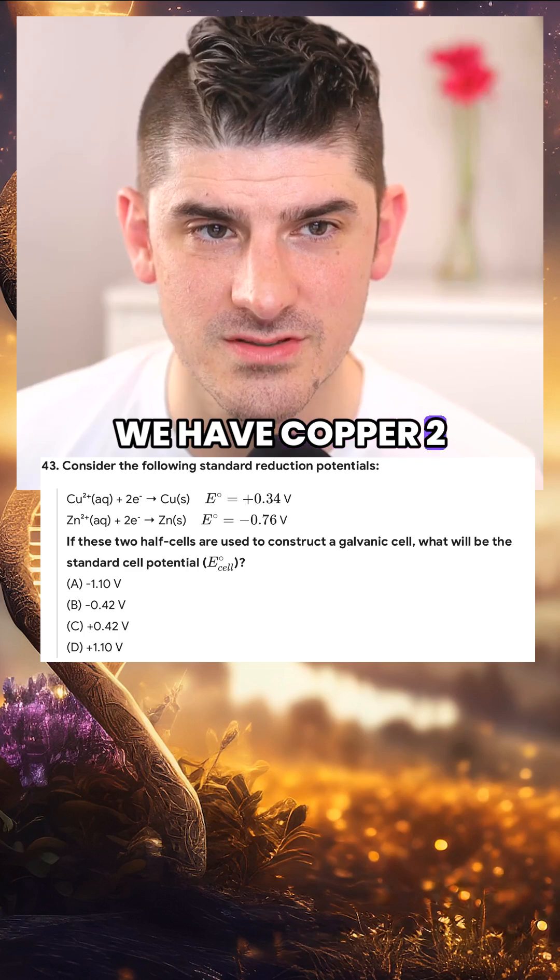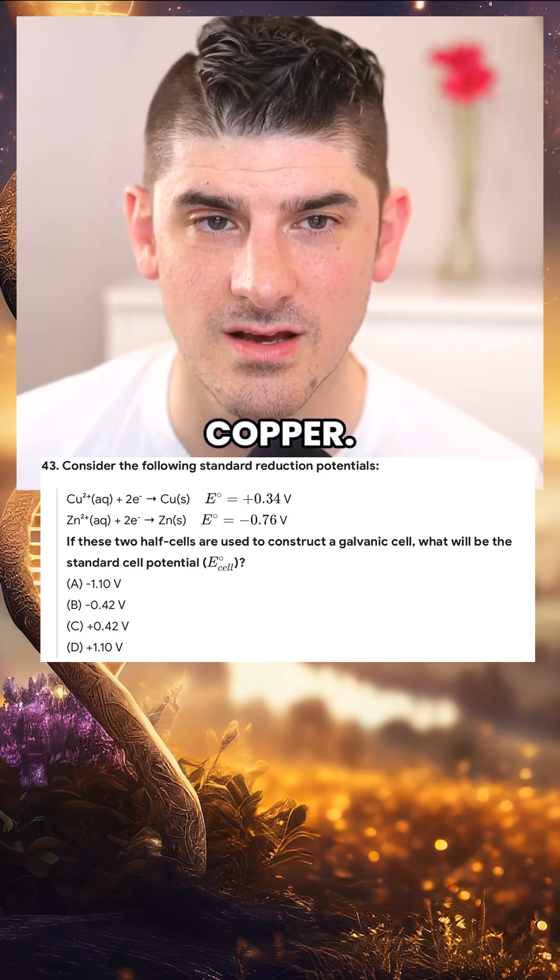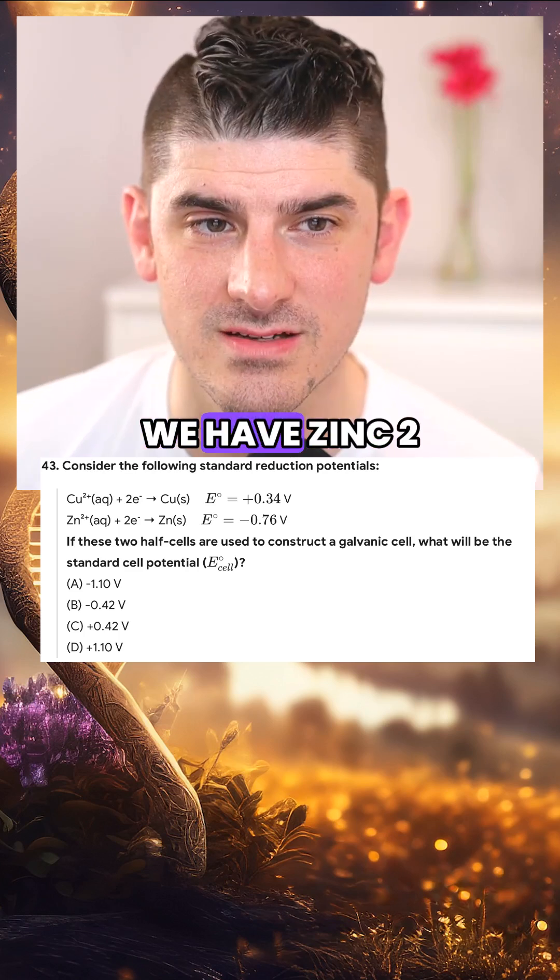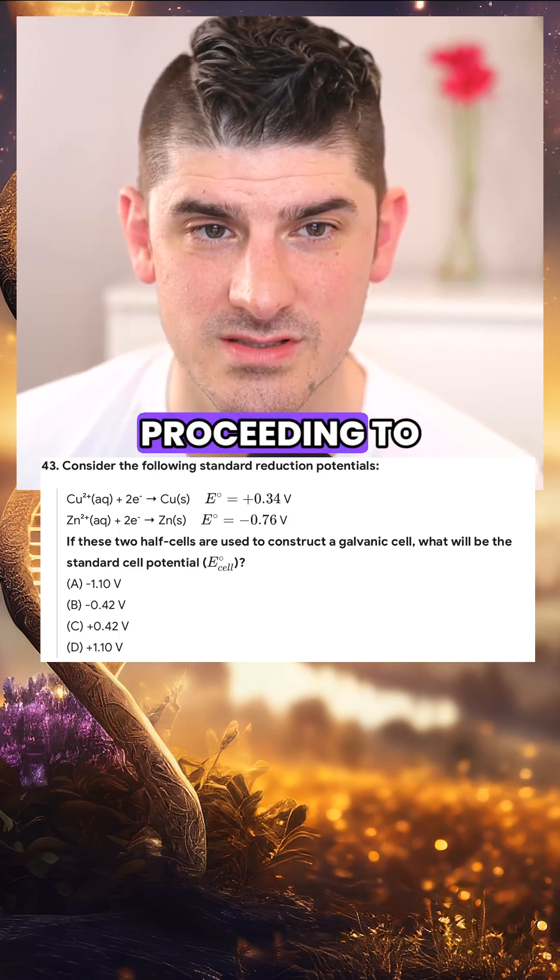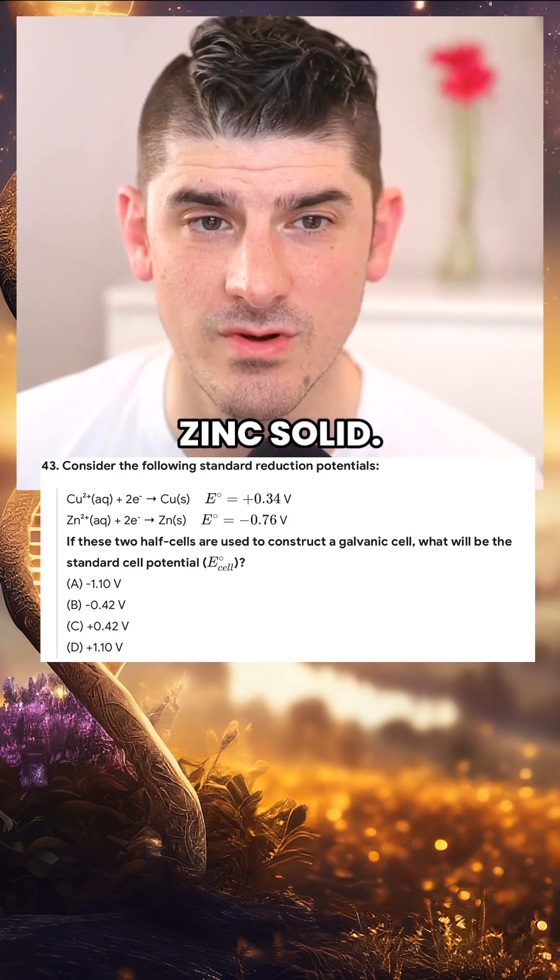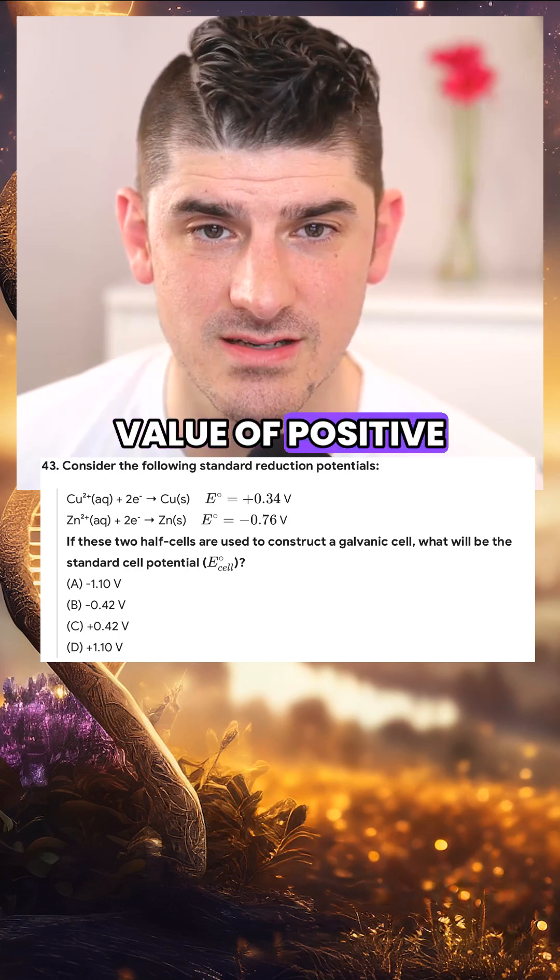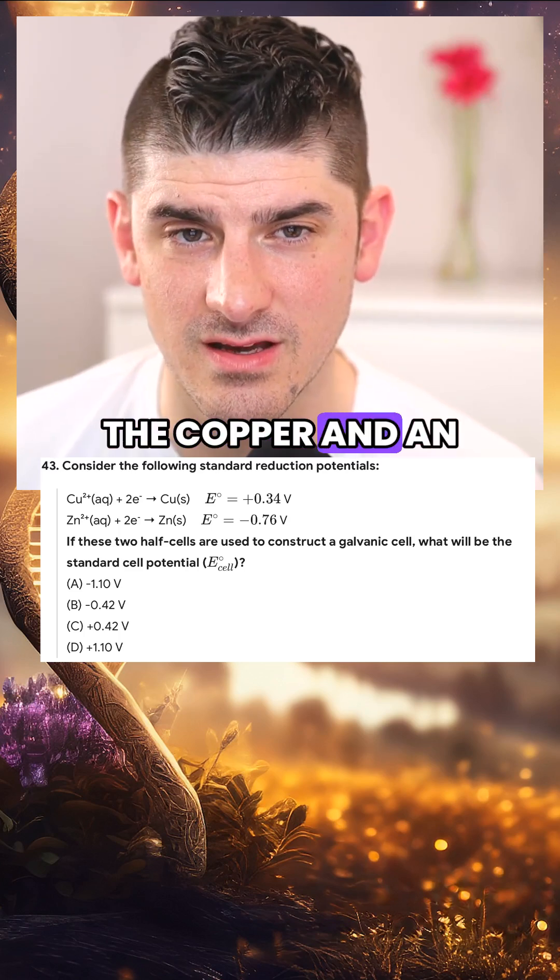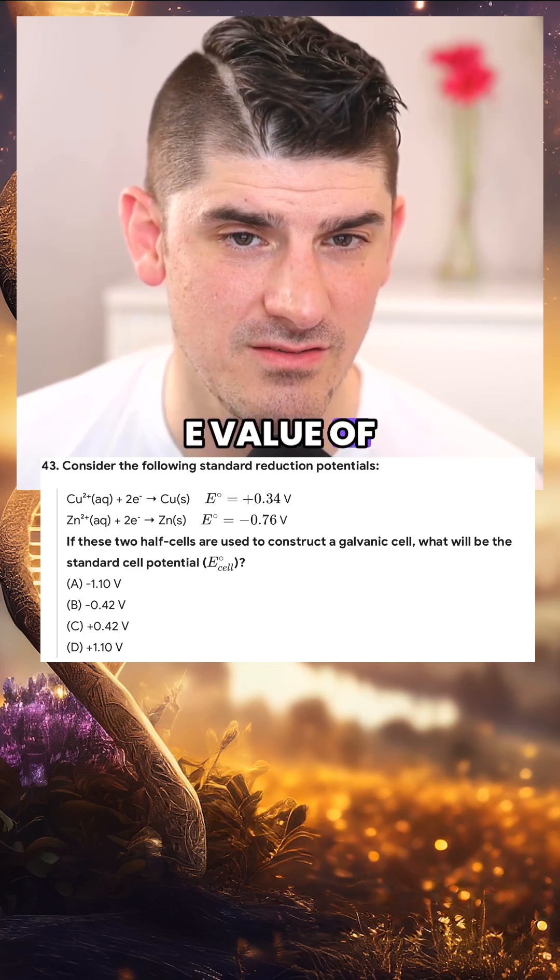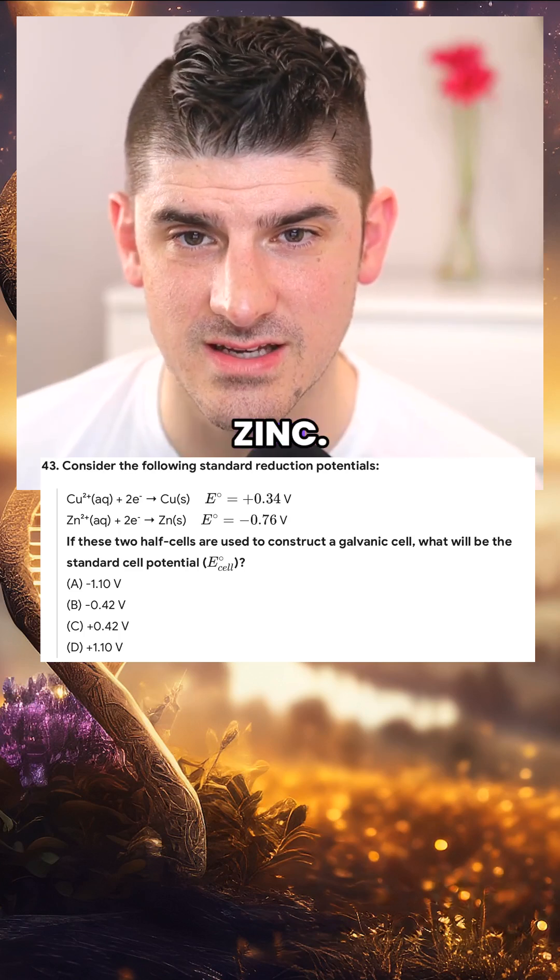We have copper 2 plus aqueous plus two electrons proceeding to copper as a solid. We have zinc 2 plus aqueous plus two electrons proceeding to zinc solid. We have an E value of positive 0.34 volts for the copper and an E value of negative 0.76 volts for the zinc.